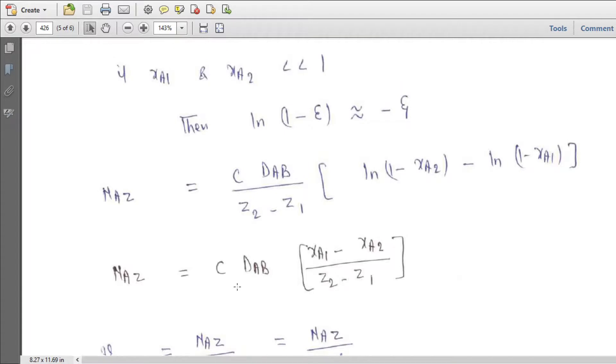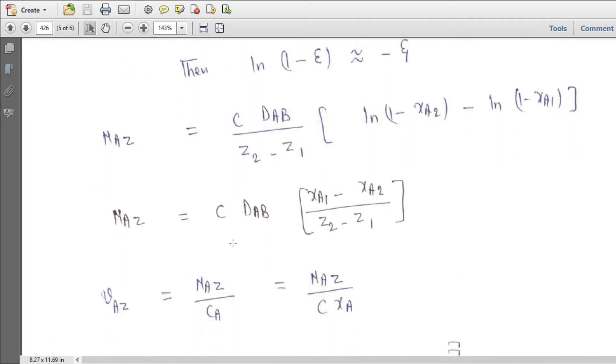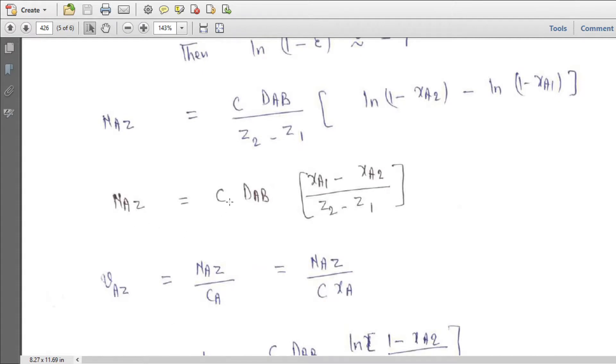Now if xA1 and xA2 is less than 1, so ln 1 minus epsilon is minus epsilon only. So we can write NAZ equal to C DAB over z2 minus z1 times ln 1 minus xA2 over 1 minus xA1. So this will seem to be minus xA2, this would become minus xA1. So this can be simplified further: NAZ equal to C DAB times xA1 minus xA2 over z2 minus z1.